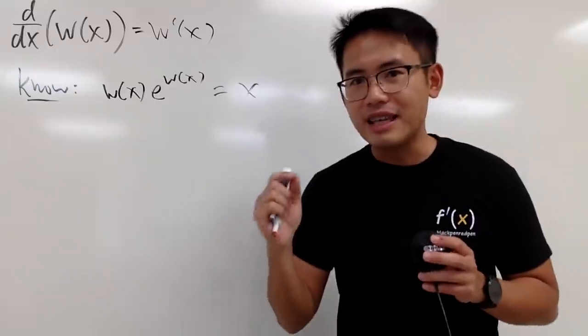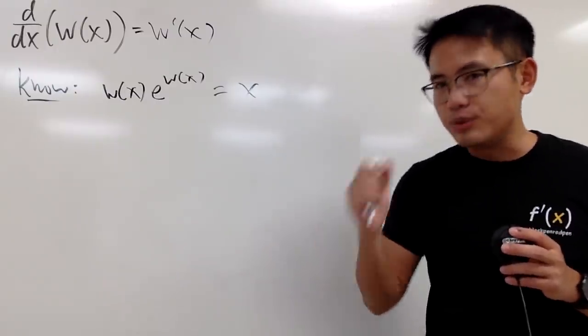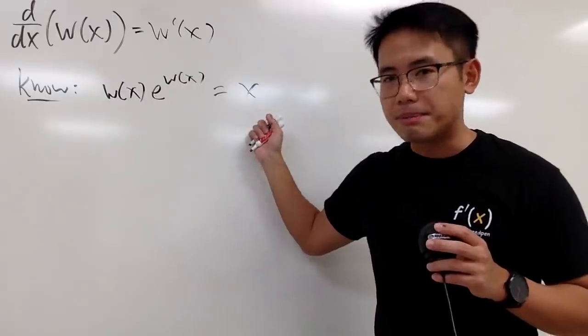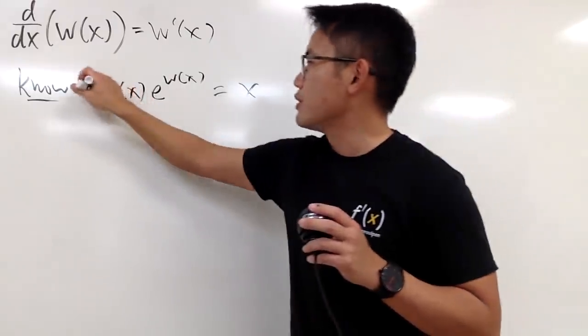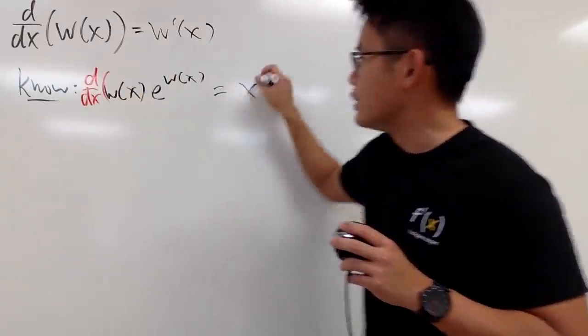Why? Because W of x is the inverse of the function x times e to the x. So if you put W and W here, you'll get the x back. And now by looking at this equation, we can just go ahead and differentiate both sides with respect to x.